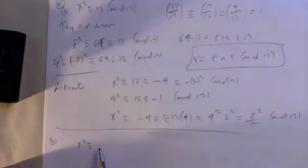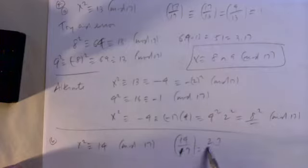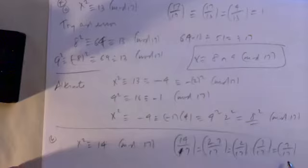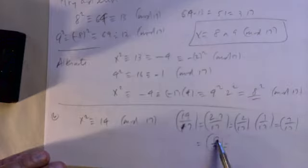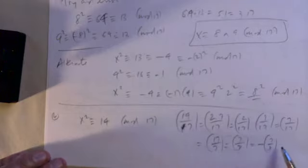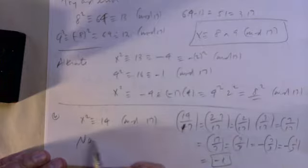Part B: find all solutions to x²≡14 mod 17. First compute (14/17)=(2/17)·(7/17). Since 17≡1 mod 8, (2/17)=+1, so this is (7/17). Since 17≡1 mod 4, apply quadratic reciprocity: (7/17)=(17/7)=(3/7). Now 3 and 7 are both ≡3 mod 4, so flipping gives −(7/3). Since 7≡1 mod 3, (7/3)=1, so the Legendre symbol is −1. There is no solution to this congruence.